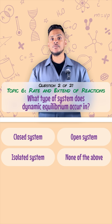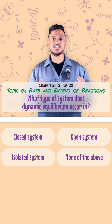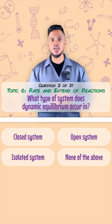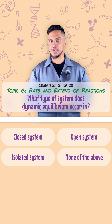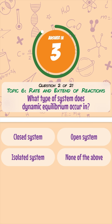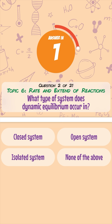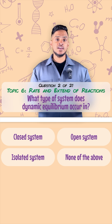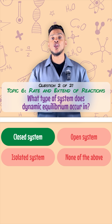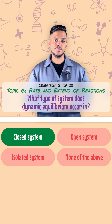What type of system does dynamic equilibrium occur in? It occurs in a closed system.